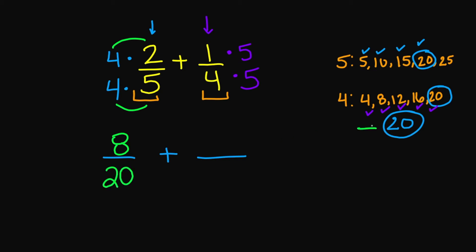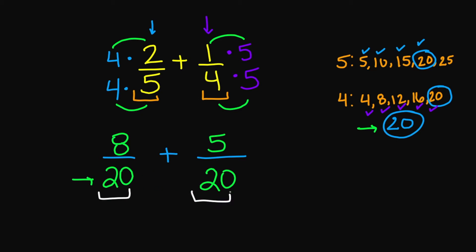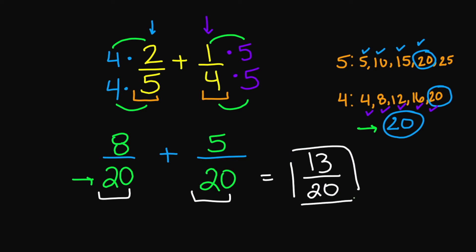Remember, this is what we want — we need to get 20 in my denominator, and this is what we have. So that's a good start. Now we have 1 times 5, that's 5. And then 4 times 5 is also 20. We need the common denominator so that we can add our fractions. Since I have 20 in my denominator, I'm going to add my numerators. 8 plus 5 is going to give us 13, and then your denominator is 20. So your final answer is 13 over 20.